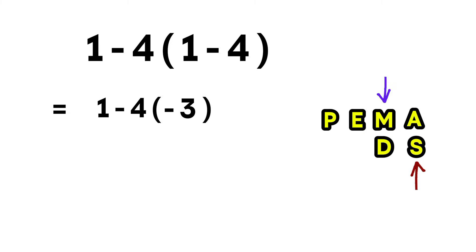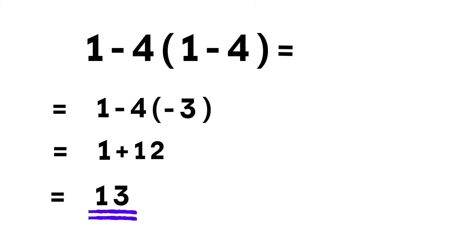So, we multiply first. 4 times negative 3 equals negative 12. Now, the expression becomes 1 minus negative 12. And 1 minus negative 12 is the same as 1 plus 12, which equals 13. So, the correct answer is 13.